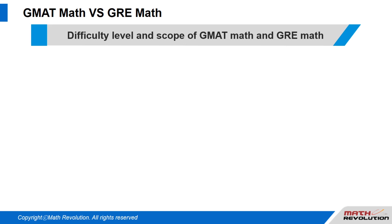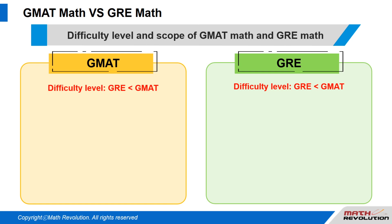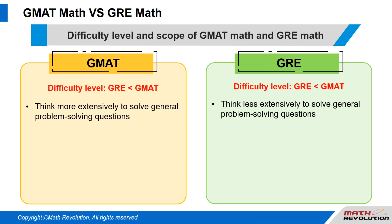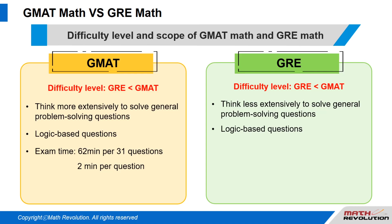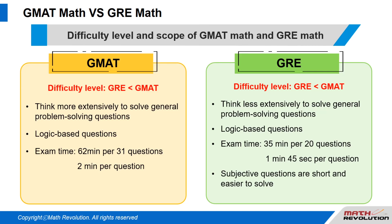The difficulty level of GMAT math is a lot higher than the difficulty level of GRE math. Students usually need to think more extensively to solve a general problem-solving question on the GMAT than on the GRE. Of course, both exams are not simple — you should be careful because the questions are logic-based. The exam time for a GMAT math section is 62 minutes for 31 questions, that is 2 minutes per question, compared to the GRE at 35 minutes per 20 questions, that is 1 minute 45 seconds per question. Although there are subjective questions on the GRE math, they are short-answer questions and easier to solve. Also, a calculator is allowed on the GRE math exam.